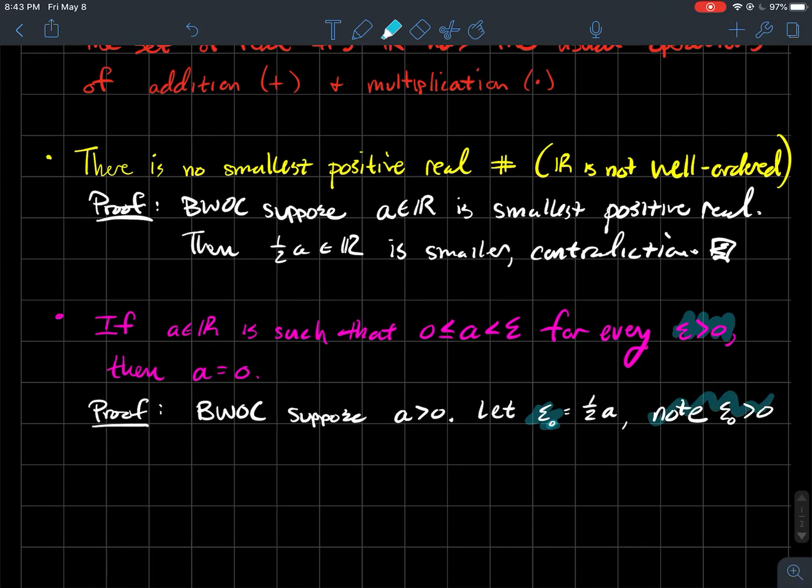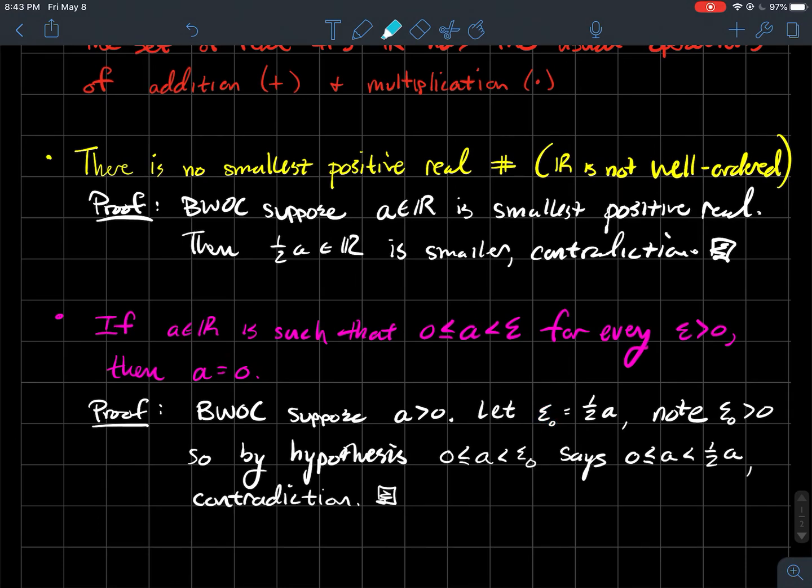So we'll notice that this is an epsilon that satisfies this assumption that it's positive. That's all I'm saying to you here. So therefore, what should I have? By hypothesis here, I should have that A should be smaller than epsilon naught. And that's what this says here. But if you actually plug in what is epsilon naught, like I just said, that says that A is smaller than half of A, which is ridiculous. That's your contradiction.